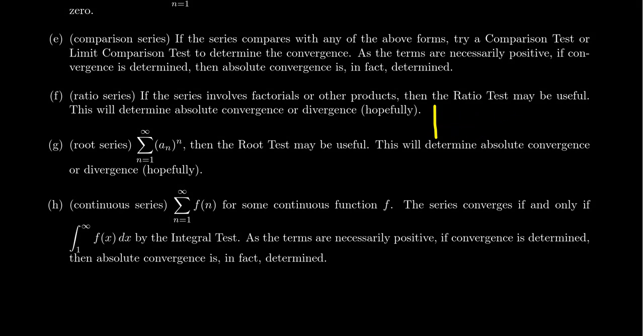The root test is very similar to the ratio test. You have to take the sequence of the nth root of the absolute value of a_n and look at this limit as it goes to L. The criteria is the same. Greater than 1 is divergent. Equal to 1 is inconclusive. Less than 1 is absolutely convergent. I would suggest using the root test when you have lots of nth powers of things.